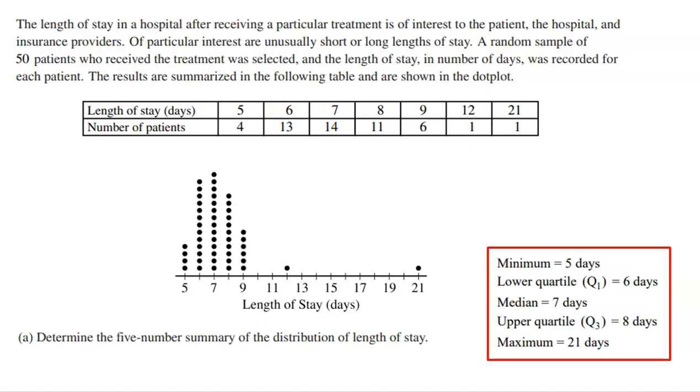The length of stay in a hospital after receiving a particular treatment is of interest to the patient, the hospital, and insurance providers. Of particular interest are usually short or long lengths of stay. A random sample of 50 patients who received the treatment was selected and the length of stay in number of days was recorded for each patient. The results are summarized in the following table and in the dot plot.